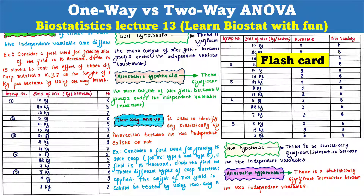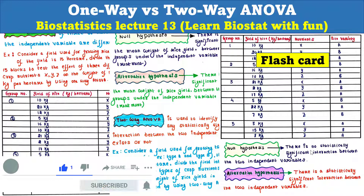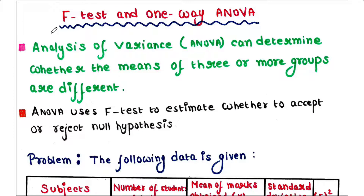Hey guys, this is Malinky, welcome back to my channel Voice of Malinky. Today we will talk about one-way versus two-way ANOVA. If you are new to my channel, please subscribe, and if you like my video, please like, comment, and share. In the last lecture we have seen how ANOVA uses the F-test to estimate whether to accept or reject the null hypothesis, and we have also seen how to calculate the F-value for one-way ANOVA.